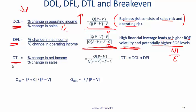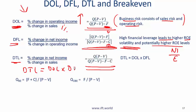Degree of total leverage is the percentage change in net income over percentage change in sales, and this is the formula. Note that DTL is simply equal to degree of operating leverage times degree of financial leverage.